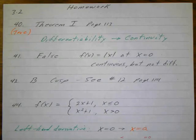Number 40, this was just true and false. It says if f has a derivative at x equals a, then f is continuous at x equals a. Justify your answer.